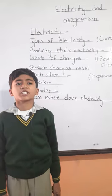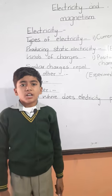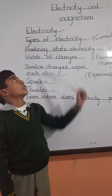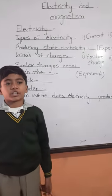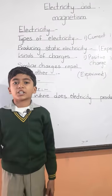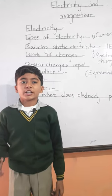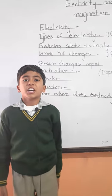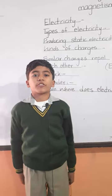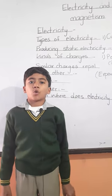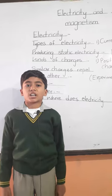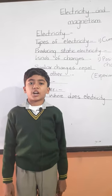Electricity is the form of energy. I will tell you about types of electricity: current electricity and static electricity. The electricity which flows through wires is called current electricity.